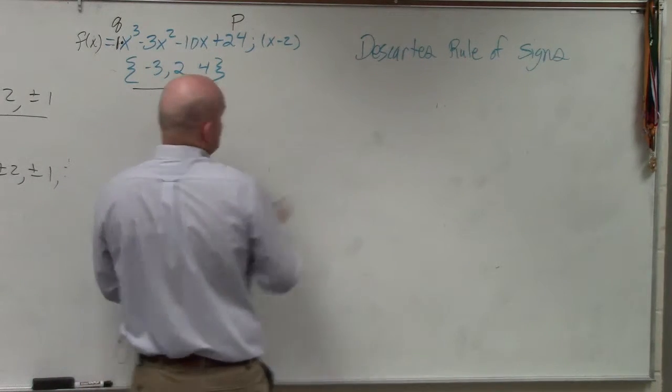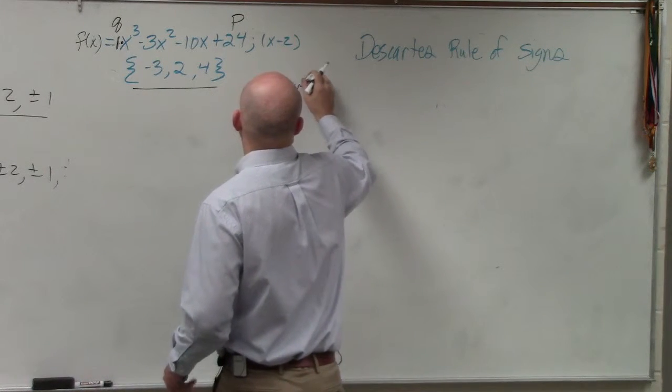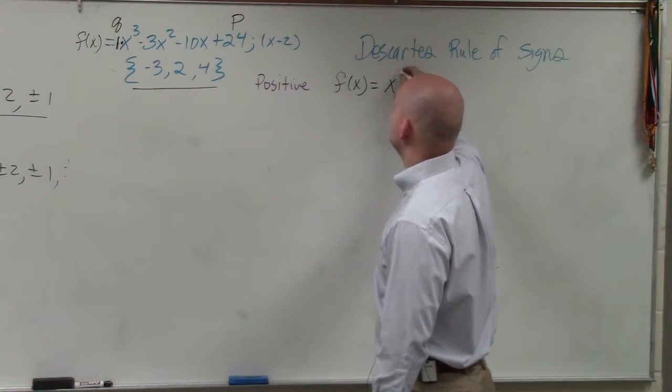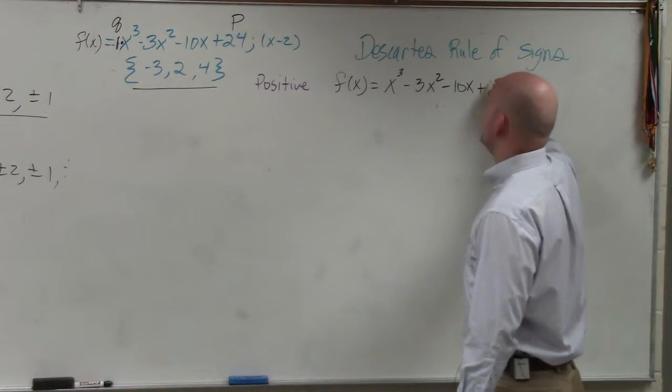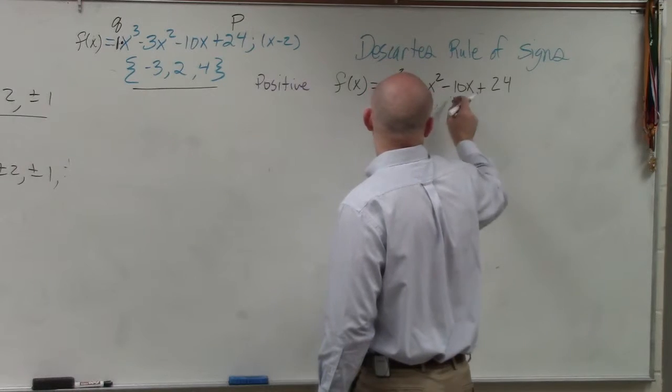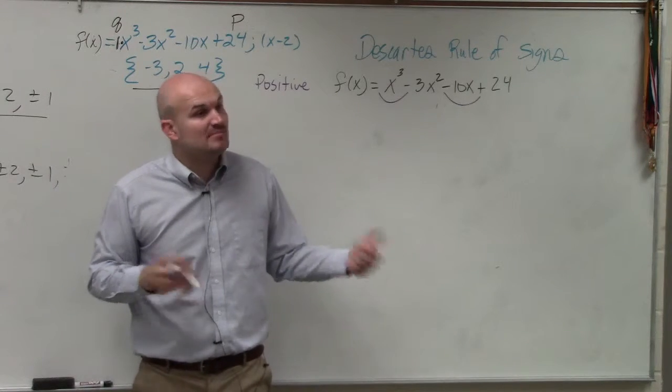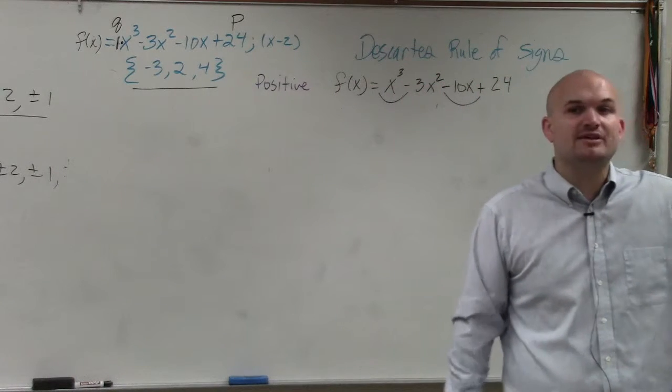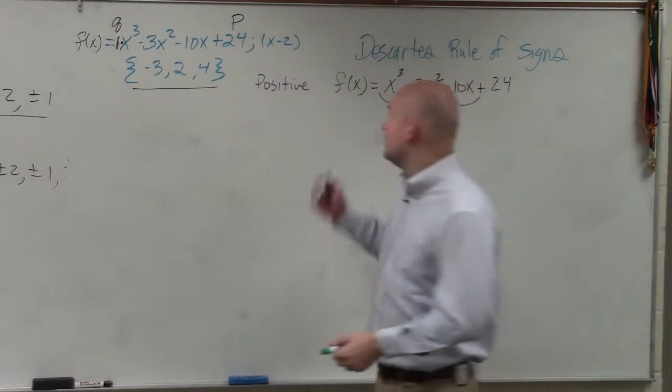So the first step goes like this. Define the number of real positive. All you simply do is take your function f of x, and you determine the number of sign changes between the terms. A sign change means that the term is going from positive to negative, or negative to positive. So in this case, I have two sign changes. Would everybody agree with me? Now Descartes' rule of signs, this is kind of confusing, but this is just his rule. Descartes' rule of signs states that the number of sign changes, minus an even number, is the number of possible positive or negative real zeros.